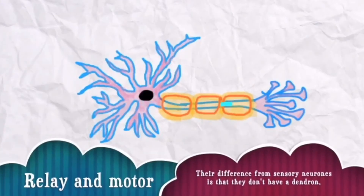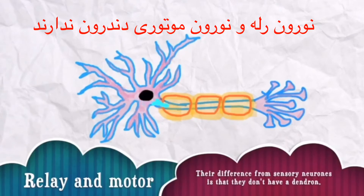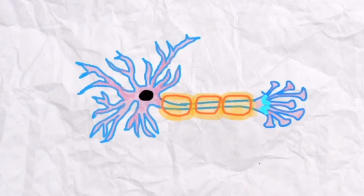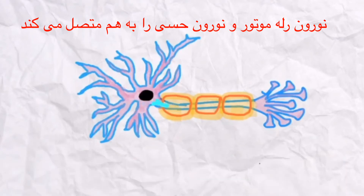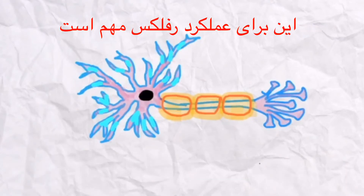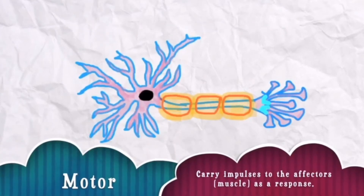The relay and the motor neurons differ from the sensory neuron in that they do not have a dendron and their dendrites are connected to the cell body. The relay neuron connects the motor and the sensory neuron and is found in the spinal cord. It is also used in the reflex arc, which we'll talk about later in the video. The motor neuron looks similar to the relay neuron and carries impulses to the effectors, which are the muscles. When a stimulus is detected, the effectors give a response.